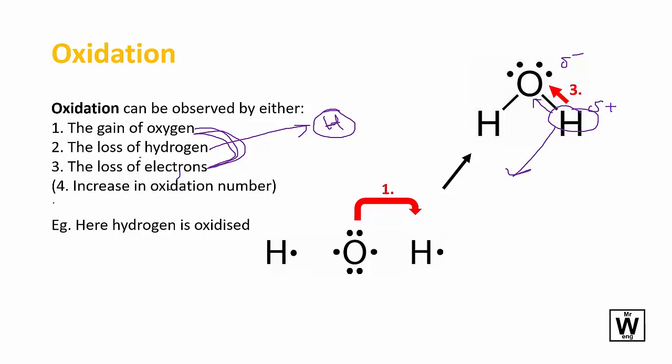And later on, we'll look at oxidation numbers as a way to work those things out. And so in this particular instance, the hydrogen has both lost its electrons and gained oxygen, so there's two reasons in this particular set of why hydrogen is oxidized.